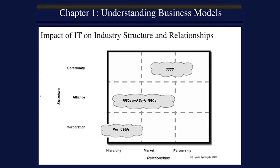Over time, we have seen companies move into the upper right corner, as illustrated in the diagram, where corporations exercise competency-based strategy by building community with numerous partners. For instance, the movement of third-party logistics companies to deliver products and services to their customers.